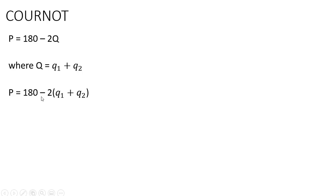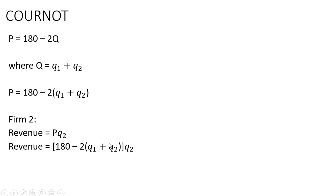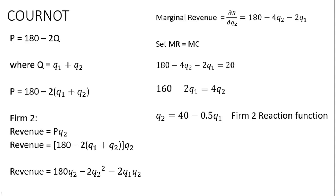Still on Cournot, we do the same for firm 2. Firm 2's revenue is price times firm 2's output, substituting in for P: R₂ = 180Q₂ - 2Q₁Q₂ - 2Q₂². Taking the partial derivative with respect to Q₂ gives MR₂ = 180 - 2Q₁ - 4Q₂. Setting marginal revenue equal to marginal cost and solving for Q₂ — subtracting 20 from both sides and dividing through by 4 — we get firm 2's reaction function: Q₂ = 40 - 0.5Q₁, which is a mirror image of firm 1's reaction function.